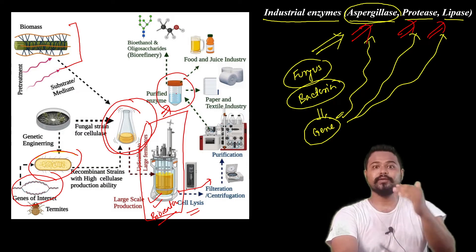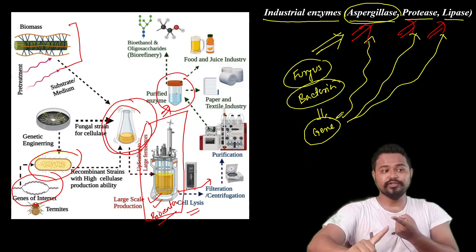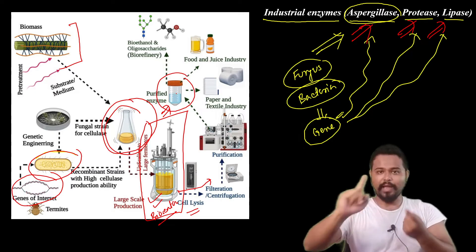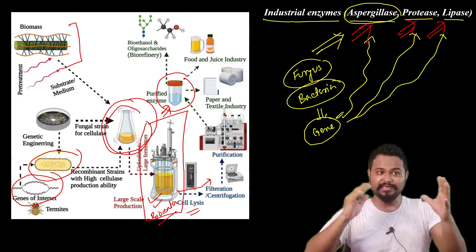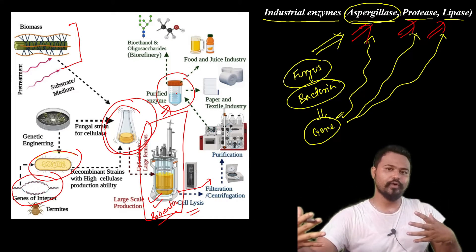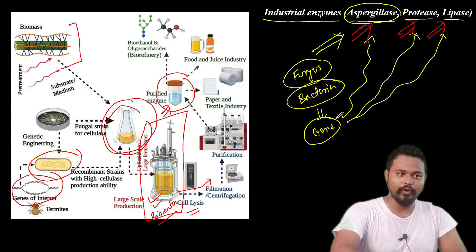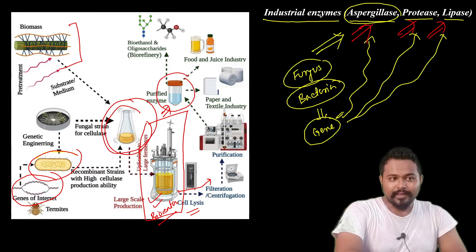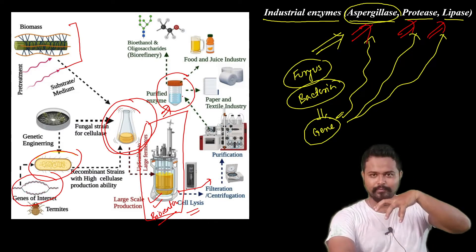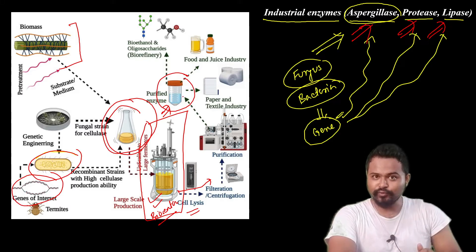Downstream processing, upstream processing, upscaling — industrial engineering at the production level. This is what is happening in the process.